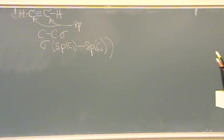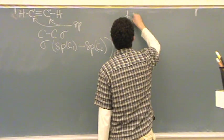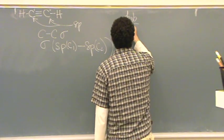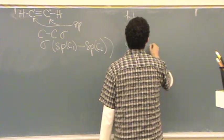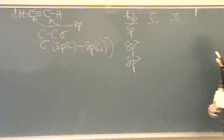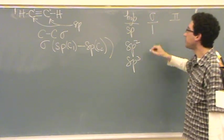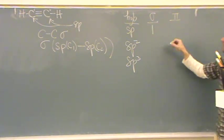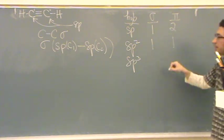One thing that I'd encourage you to remember, maybe I'll make a table of this. Here's hybridization. SP, SP2, SP3. And I'll put sigma as a column and pi as a column. An SP bond will always have one sigma bond and two pi's. This one will have one sigma bond and one pi.